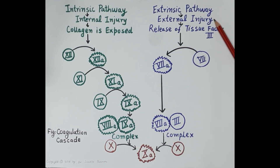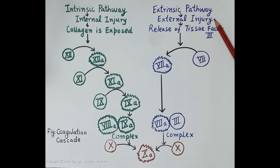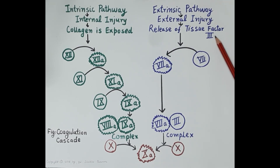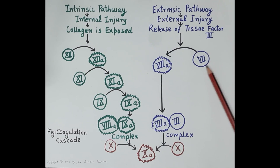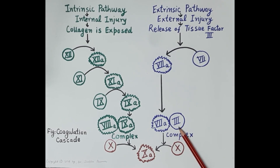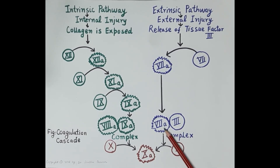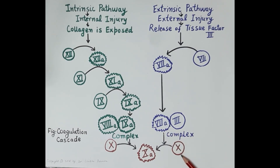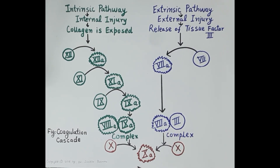The extrinsic pathway is initiated due to external injury to the wall of blood vessels — for example, because of an accident or trauma. The injured blood vessel wall releases clotting factor 3, called tissue factor or thromboplastin, into the blood. This tissue factor activates clotting factor 7 to 7a. The tissue factor then complexes with clotting factor 7a, and this complex activates clotting factor 10 to 10a.